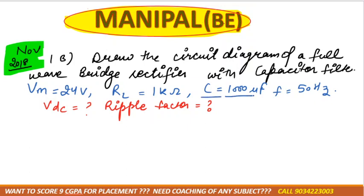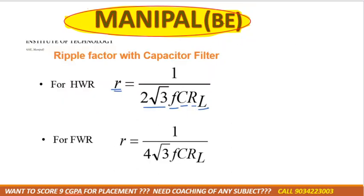This is a capacitor — they have given it as micro farad. One micro farad is equal to 1 × 10⁻⁶ farad. Basically, they have given you a question on capacitor filter and they ask you the VDC and ripple factor. Only these two formulas are different in the case of a capacitor filter.